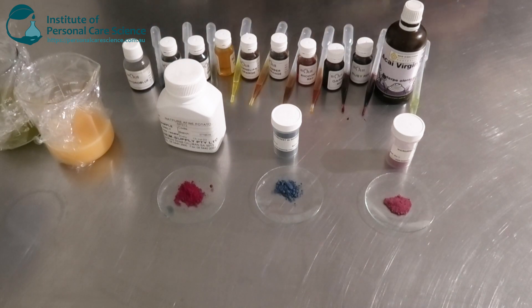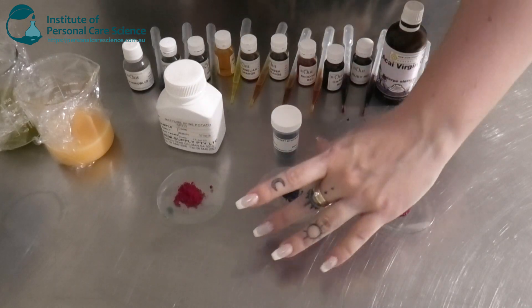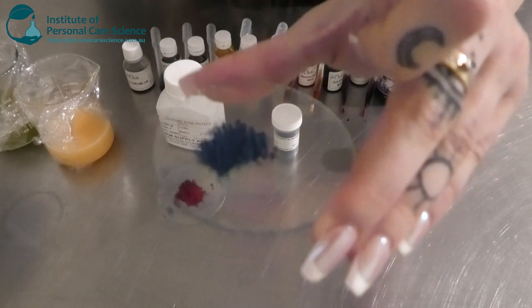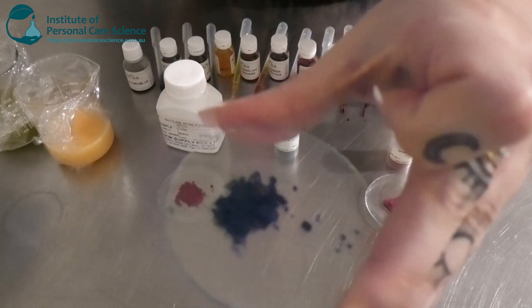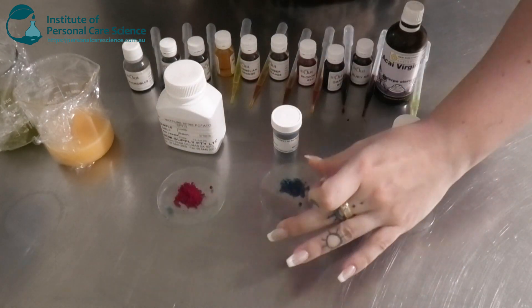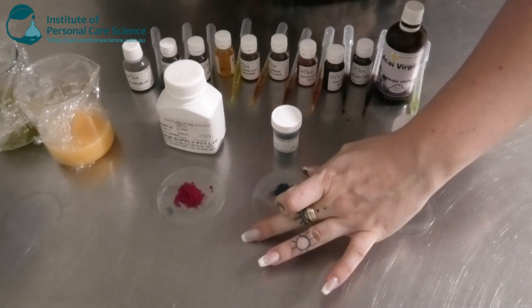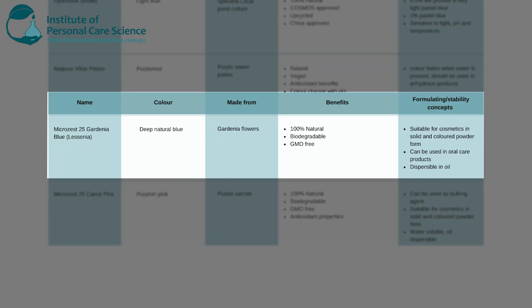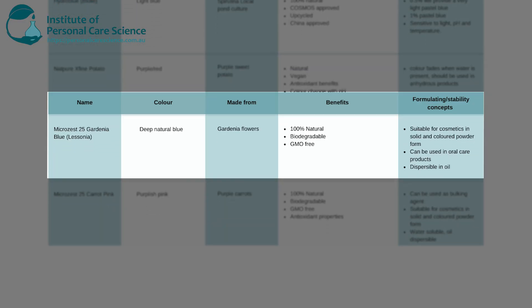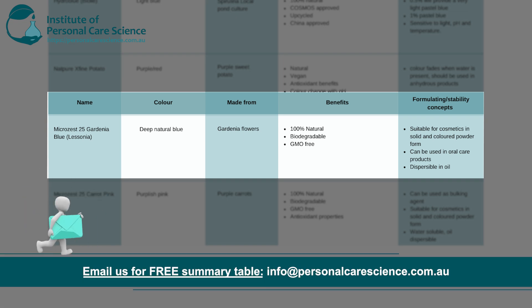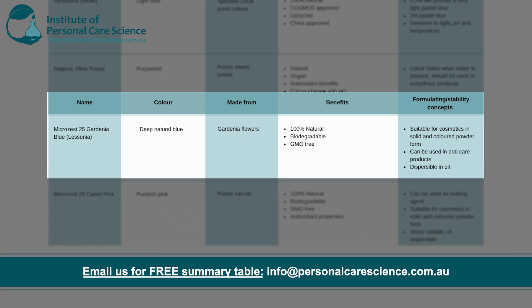The next one is the Micro Zest 25 Gardenia Blue by Lesiona — another beautiful electric, deep dark blue color. This is made from a dry extract of gardenia flowers, providing a nice deep natural blue color that is quite intense. It's 100% natural origin, biodegradable, and GMO-free.